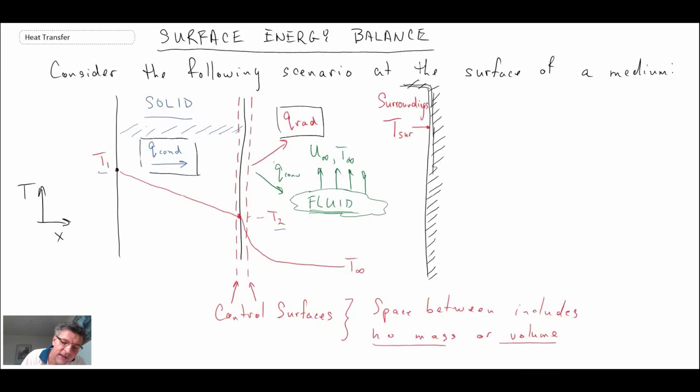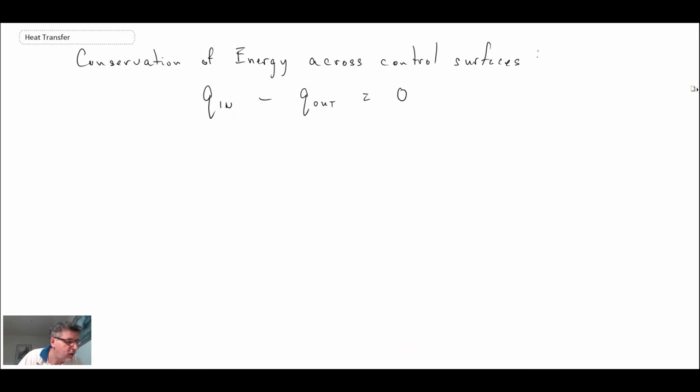We have radiation and convection. So those are the three things we will put into this equation. We can rewrite: what is coming in is Q_conduction, and what is leaving is heat transfer due to convection and radiation. Those all need to sum to zero.